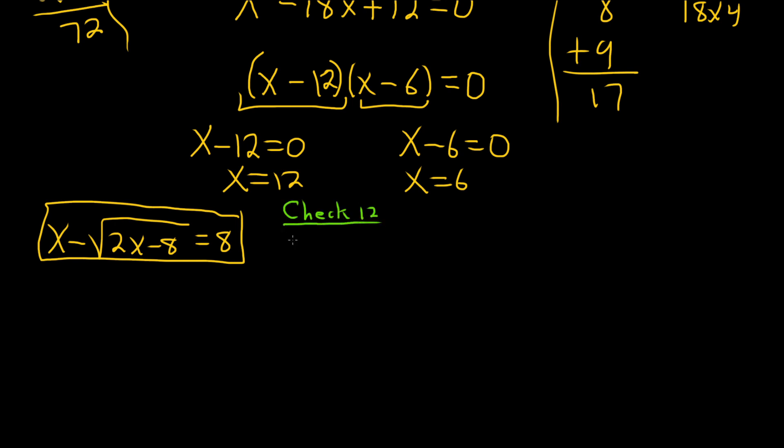Let's check 12. So we get 12 minus the square root of 2 times 12 minus 8, and that should be equal to 8. So it's 12 minus the square root of 24 minus 8, which equals 12 minus the square root of 16. That's 12 minus 4 is equal to 8. 8 is equal to 8. Yes. That is one of the answers.